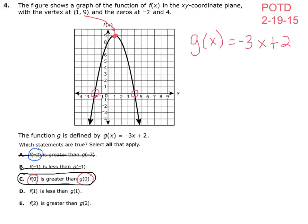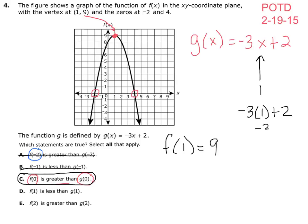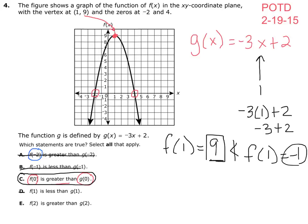Let's look at D. D says f of 1 is less than g of 1. When x is 1 on f of x, y is all the way up here at 9, so f of 1 equals 9. For g of 1: negative 3 times 1 plus 2 equals negative 3 plus 2, which is negative 1. The statement says f of 1 is less than g of 1 — that would be 9 less than negative 1 — which is clearly not true, so D is false.